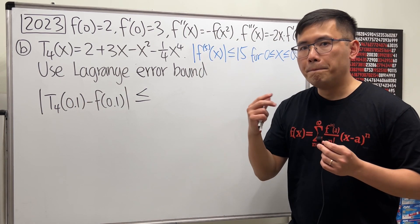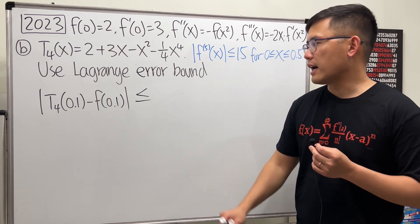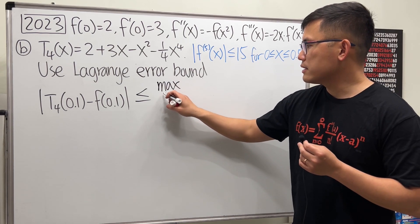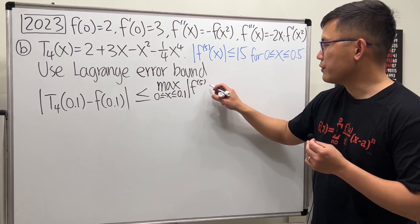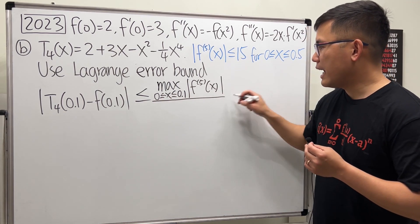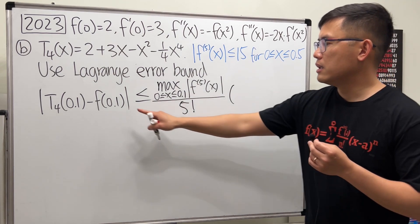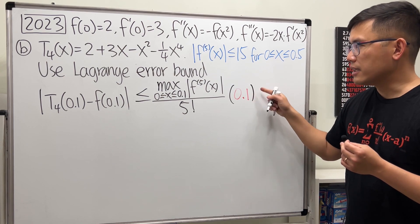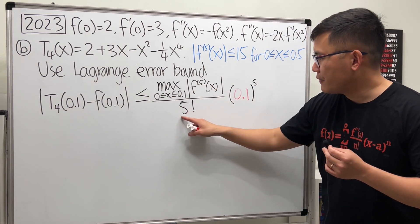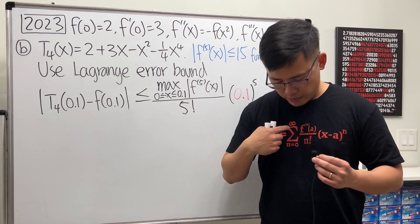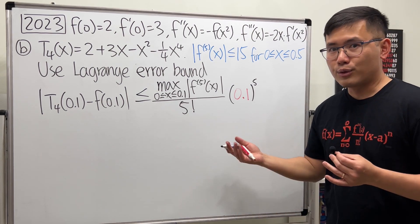Since this is a fourth degree Taylor polynomial, we want the maximum of the fifth derivative — one more than the degree. I'll use the same notation as the official scoring guide: the maximum of the absolute value of the fifth derivative on the interval from 0 to 0.1, since we go to 0.1. Then divided by 5 factorial, multiplied by x minus the center, which is 0.1 to the fifth power. So if the polynomial degree is 4, everything steps up to 5.